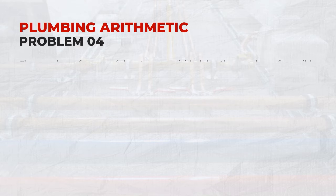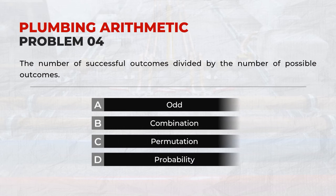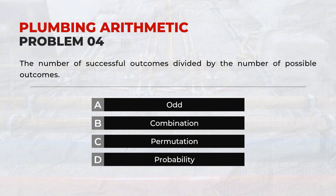The number of successful outcomes divided by the number of possible outcomes. Answer: D. Probability.